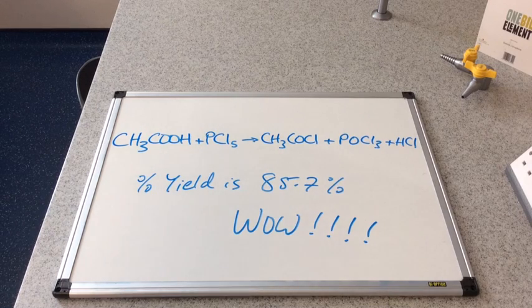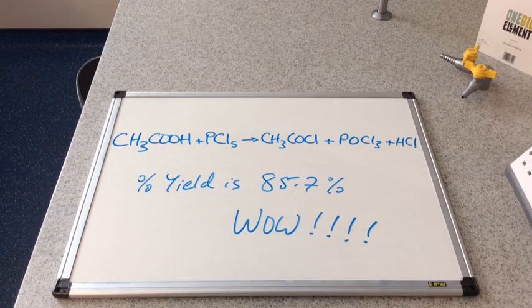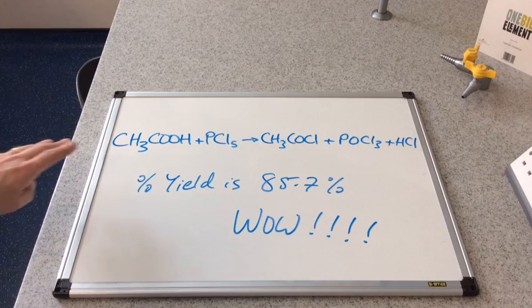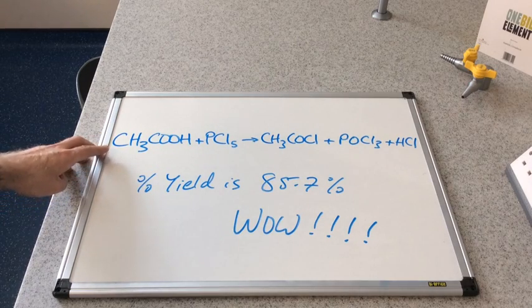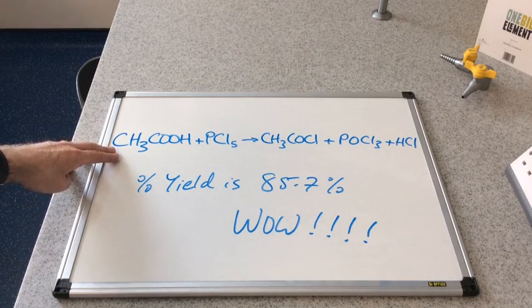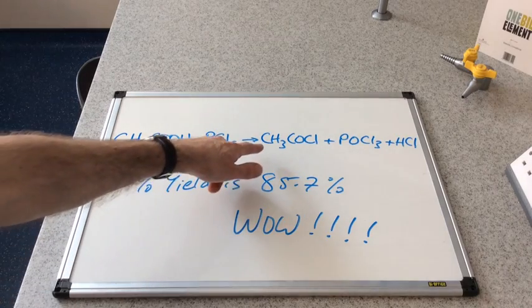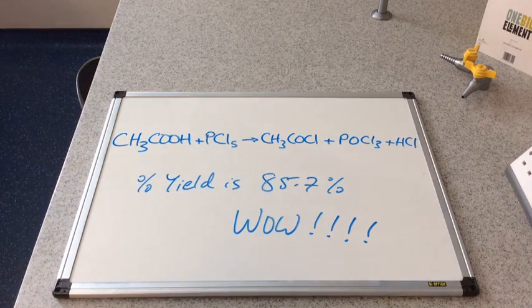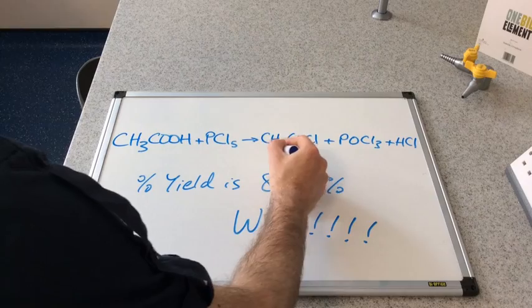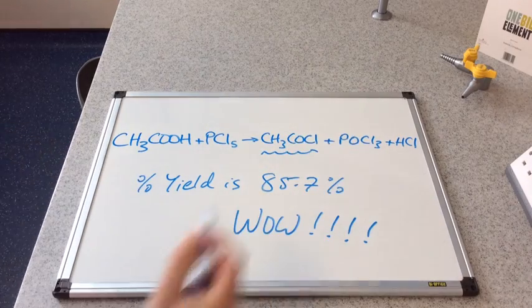I just want to start this video by sharing this amazing news with you. We've stumbled across this reaction between ethanoic acid and PCl5, and it's making CH3COCl. That's what we want to make. You can tell by my voice, I'm just so excited by this reaction.